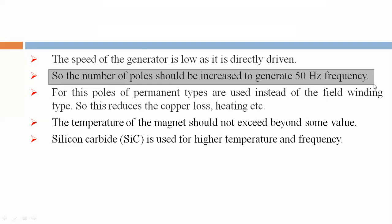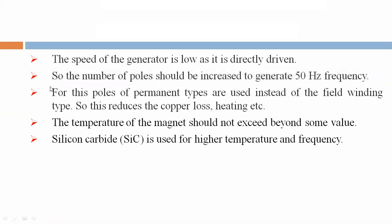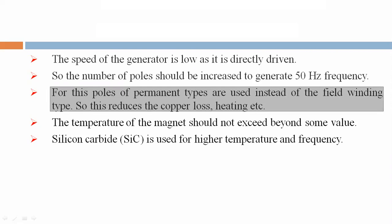To generate 50 Hz frequency at low speed, the number of poles should be increased. Instead of field winding type poles, permanent magnets are used. This reduces copper loss and excessive heating in the generator.